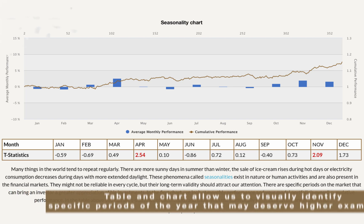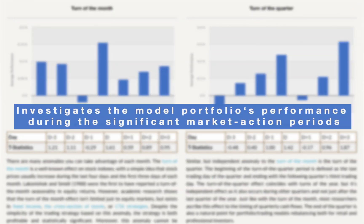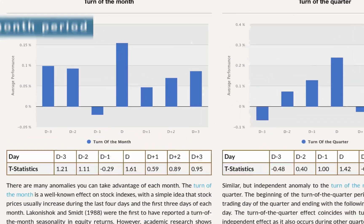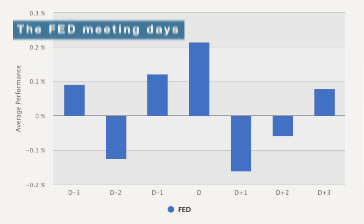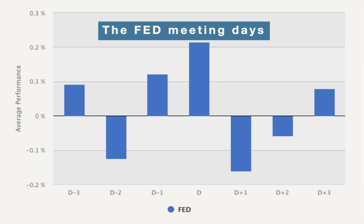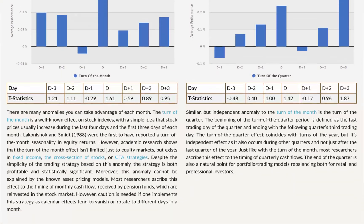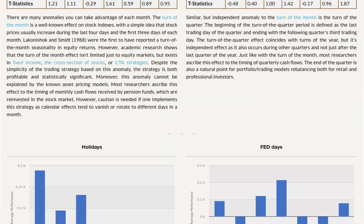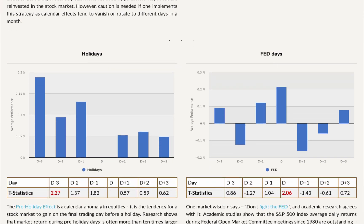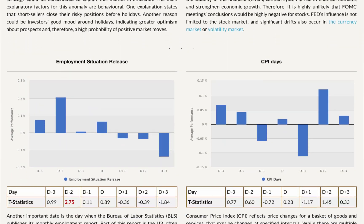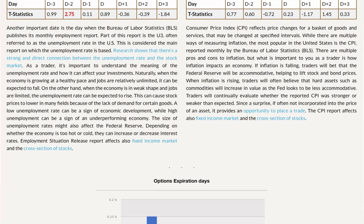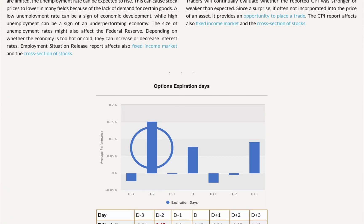The second section investigates the model portfolio's performance during significant market action periods, like the turn of the month period, days of economic announcements, the Fed meeting days, etc. It allows us to better understand how the model portfolio performs and reacts to various calendar events, and decide whether an increase or decrease in exposure during those periods is appropriate.